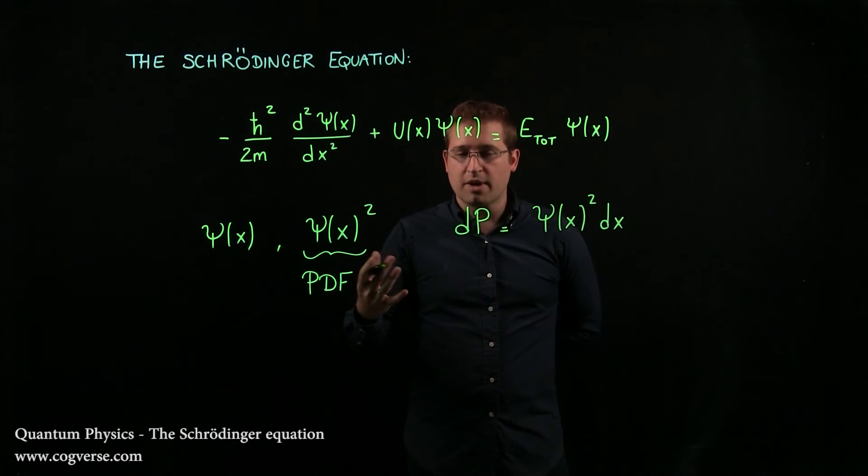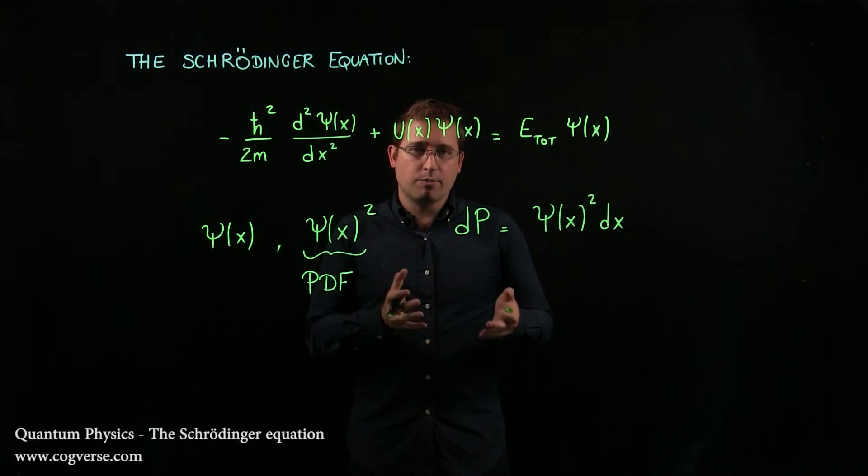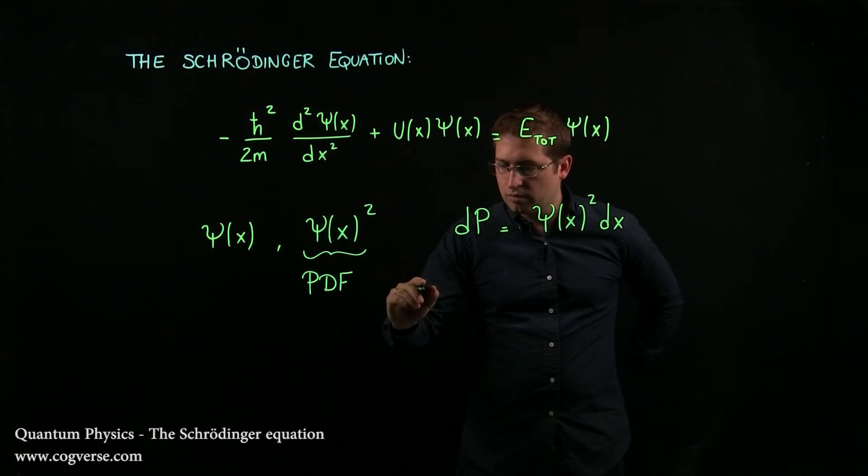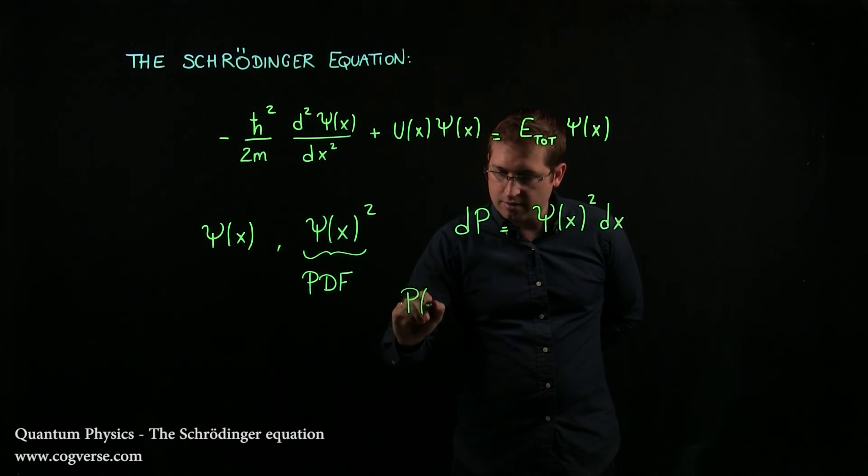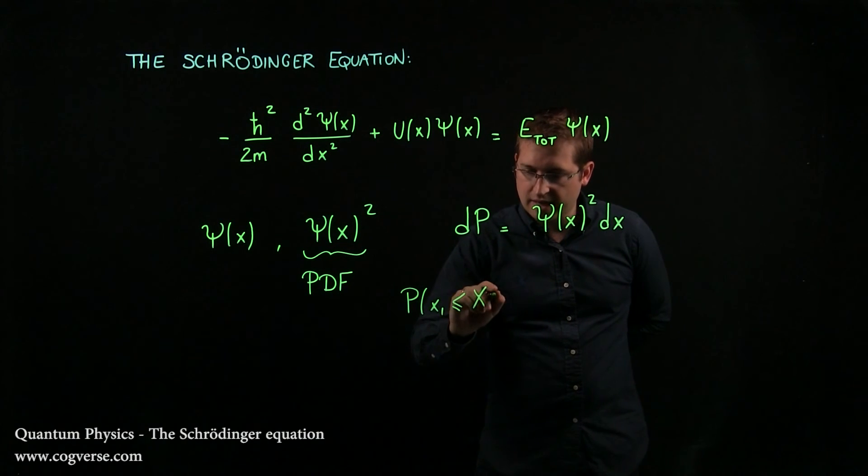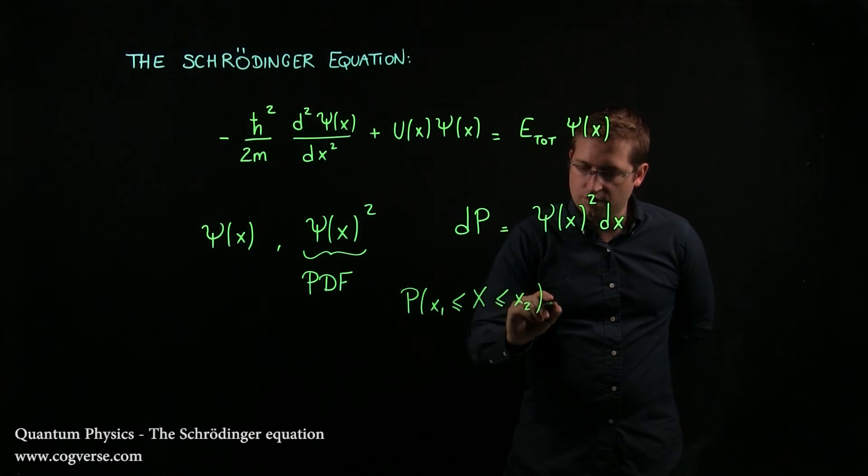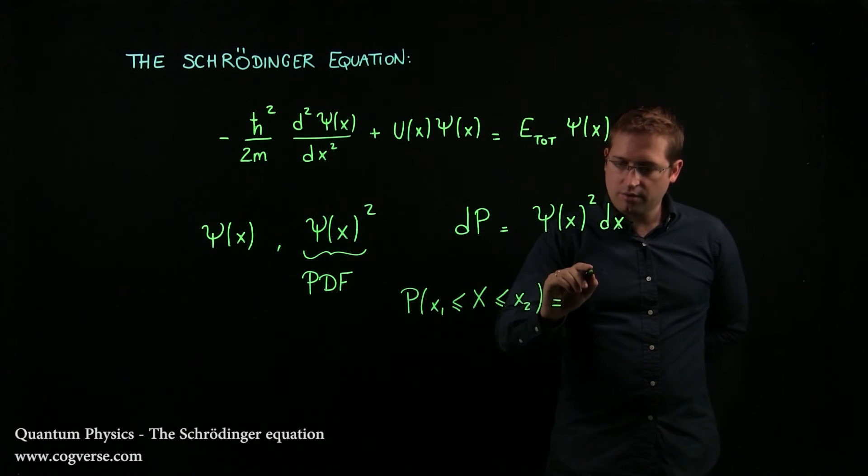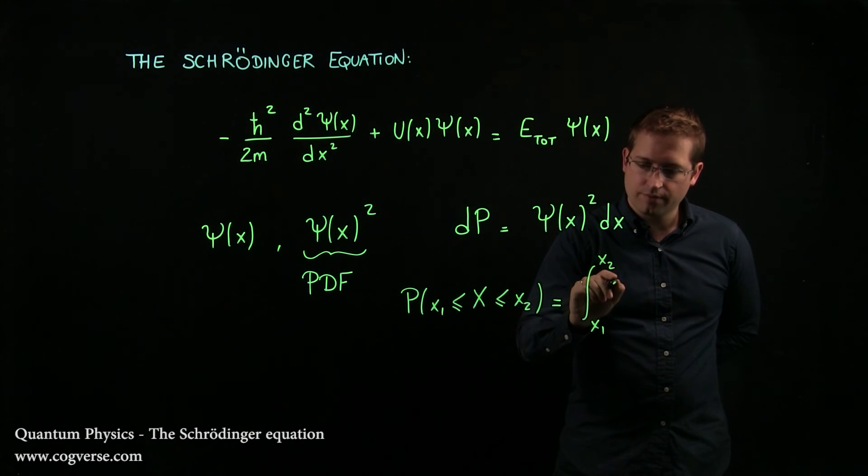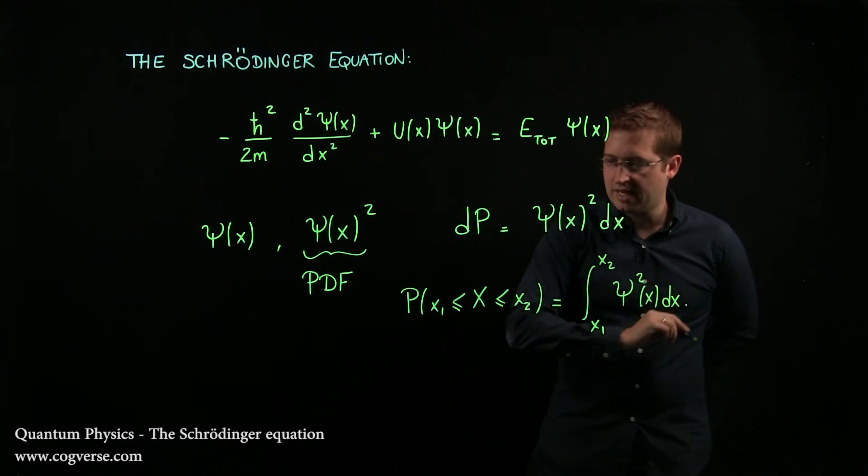Now the integrated form might make more sense. If you want the probability of finding the particle in between two positions, say x₁ and x₂, let's write that the probability that the location X of the particle be between x₁ and x₂. And that's the integral from x₁ to x₂ of ψ² dx.